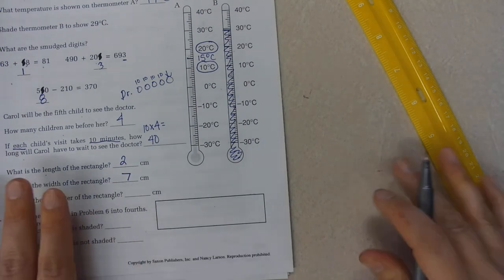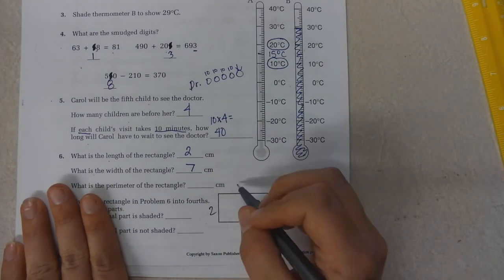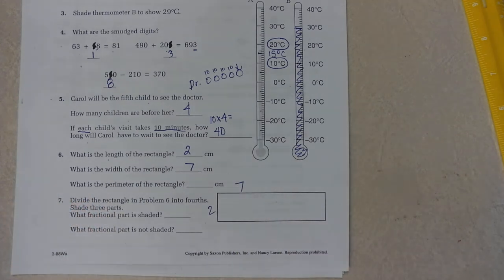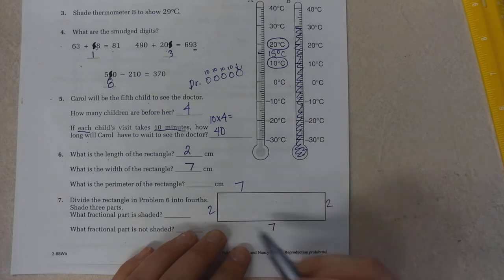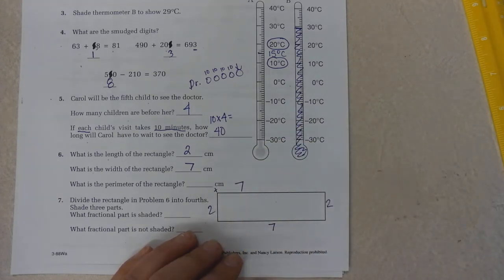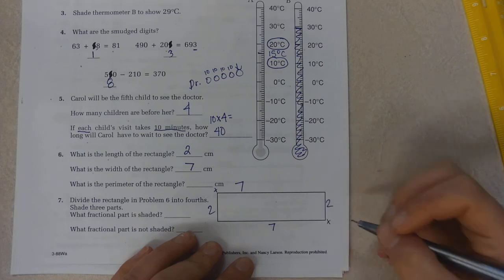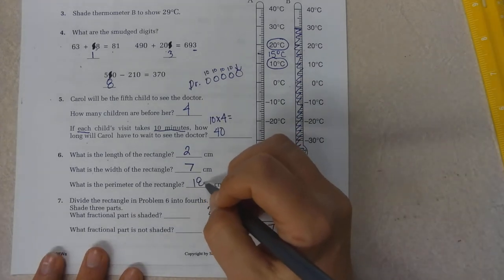So what would the perimeter be? 2 and 7, 2 and 7. The perimeter, you just add up all the sides. Well, I know 2 plus 7 is 9. So 2 plus 7 is 9, 9 plus 9 would be 18. That would be my perimeter.